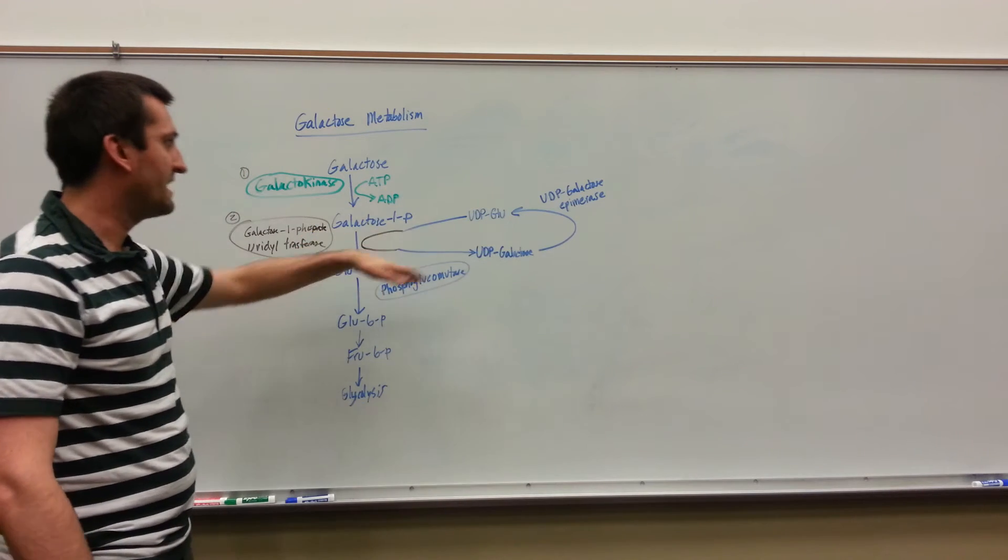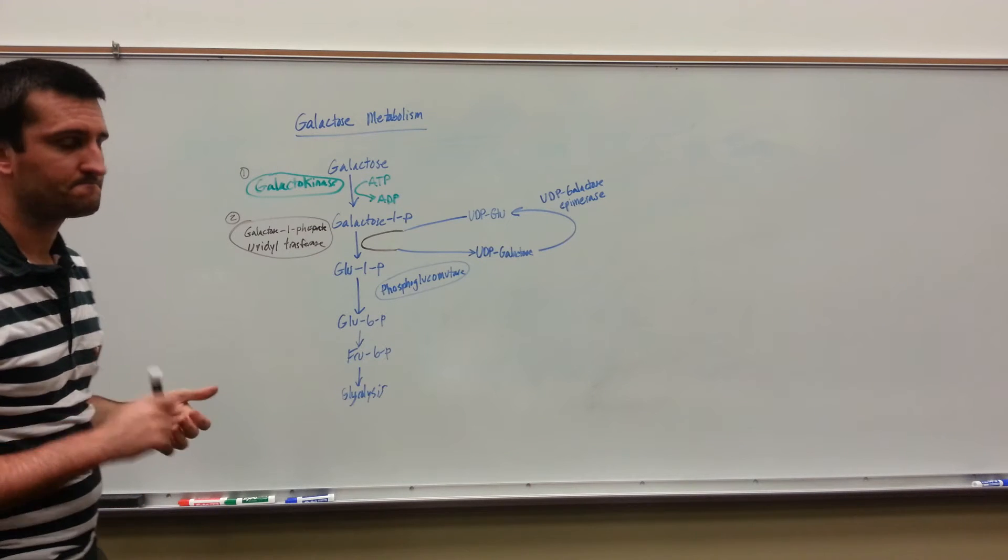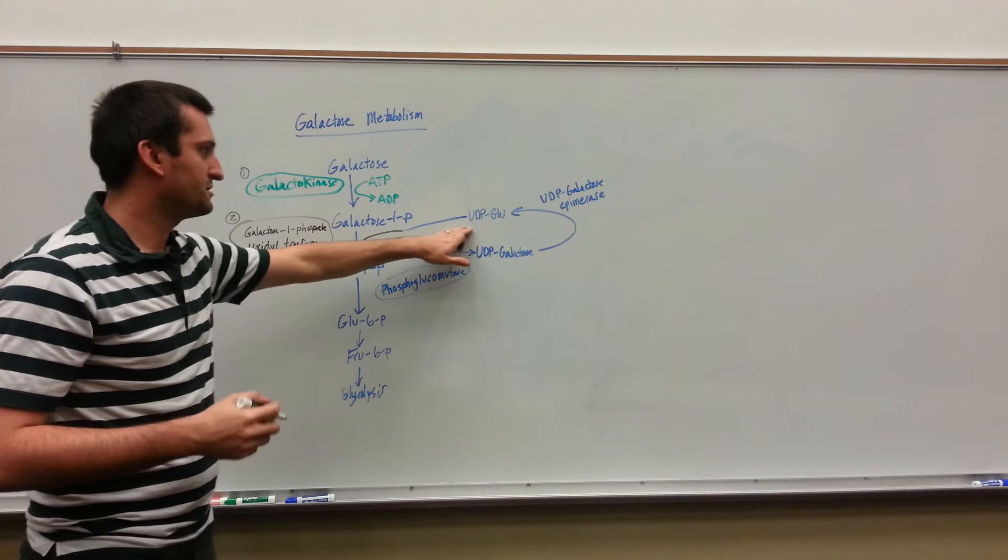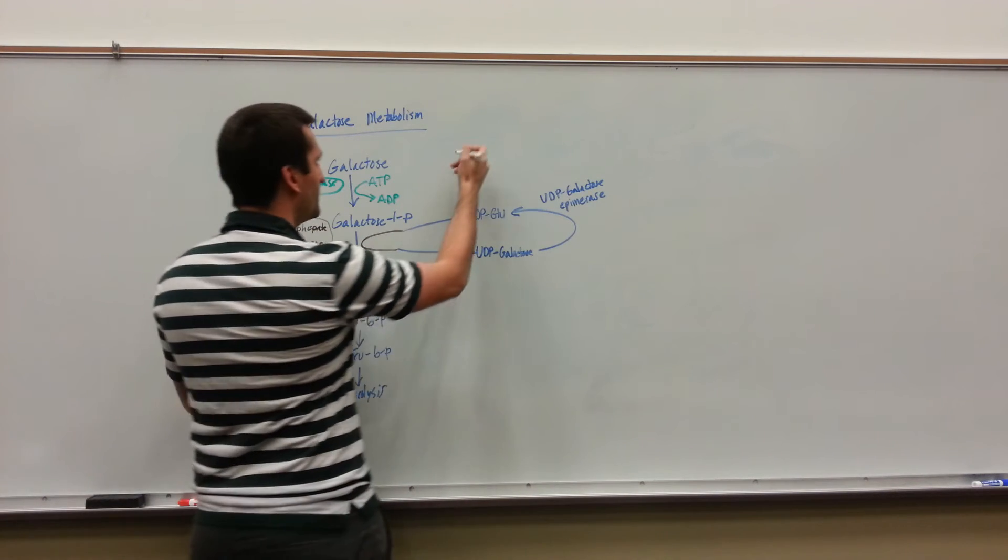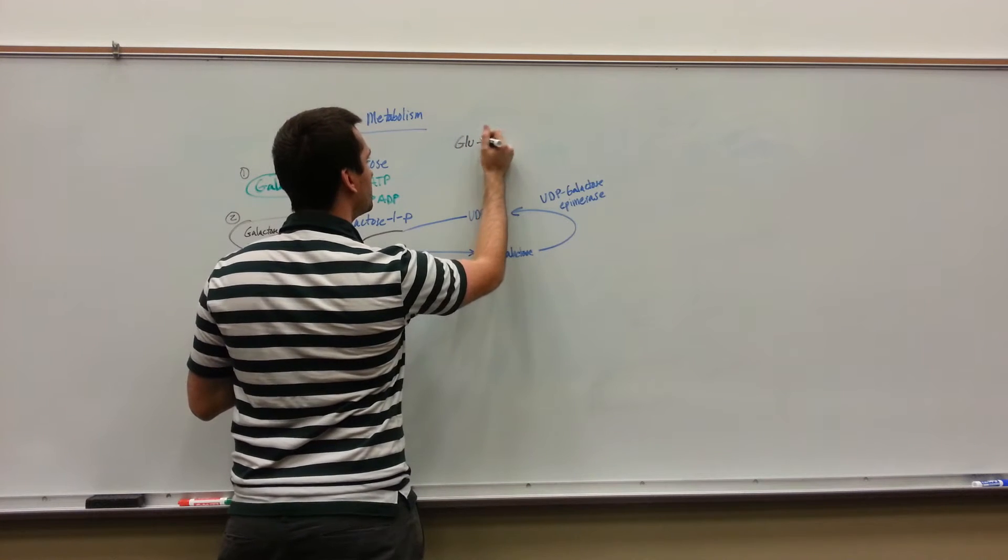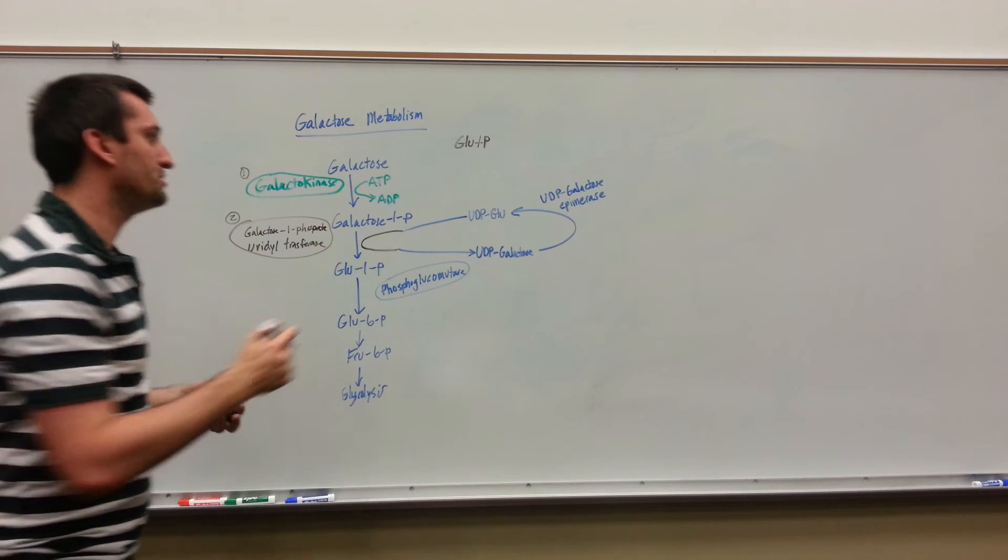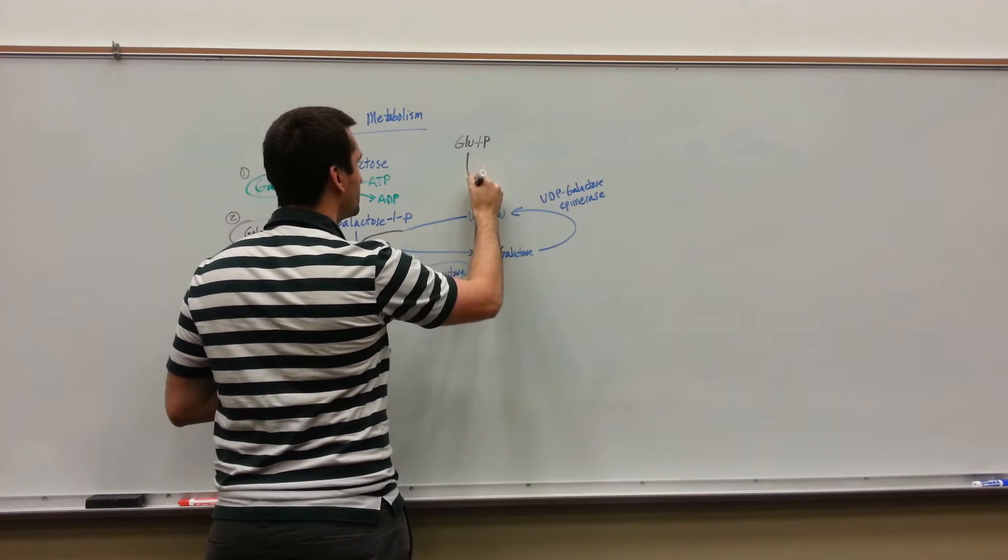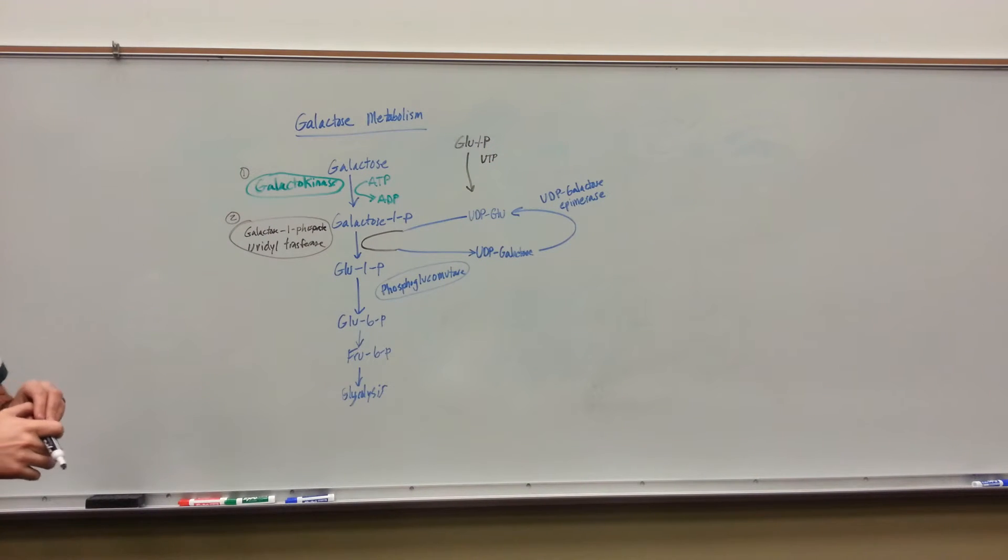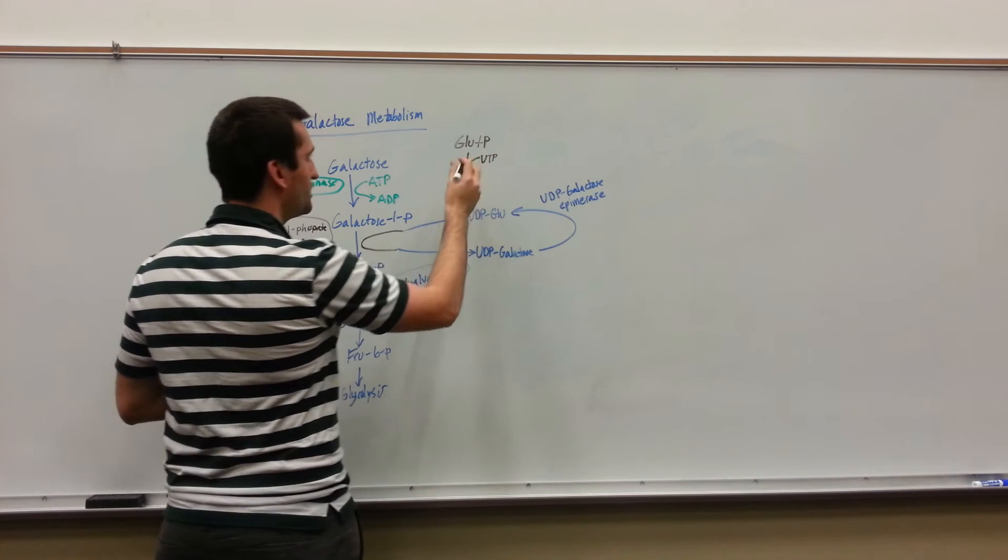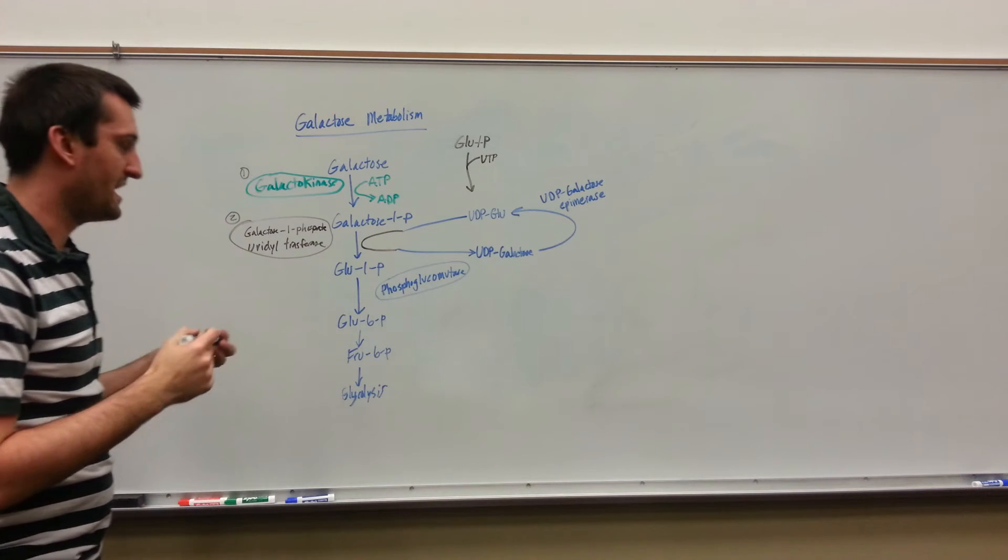You can keep using that to convert more and more glucose 1-phosphate. How do we eventually get this UDP glucose? We're going to take a glucose 1-phosphate and attach a UTP to it. We're going to add UTP into the system and that'll spit out a UDP glucose. That is how we get that.